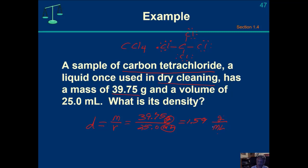In the denominator, the volume is always set to 1 — so this is actually 1.59 grams per 1 milliliter. We generally just write it as grams per milliliter and the 1 in the denominator is understood. It's like your velocity going down the road is 65 miles per 1 hour, or 65 miles per hour.